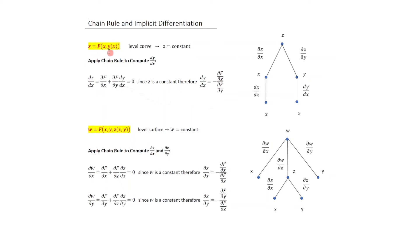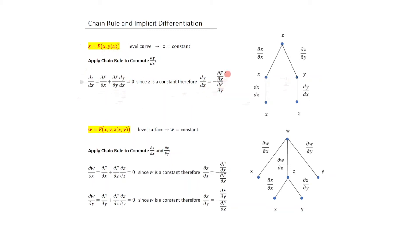If Z = f(X, Y(X)) and Z is a level curve (constant), applying the chain rule gives DZ/DX = ∂F/∂X + ∂F/∂Y · DY/DX = 0. From this we can compute DY/DX. This approach allows us to compute DY/DX for an implicit function where we cannot explicitly extract Y as a function of X.